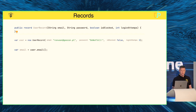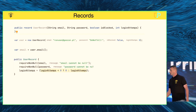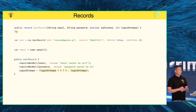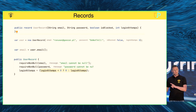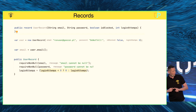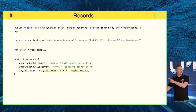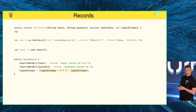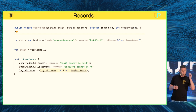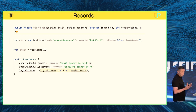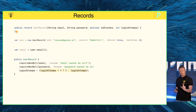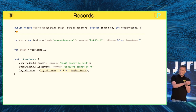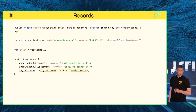Records also come with compact constructors. You write the constructor without specifying the fields, because the compiler already knows them from the definition. In this way you can still do all your validations on the incoming values. When I refer to requireNonNull on the email, I'm referring to the parameter value, not the instance variable. I'm not setting any values here — the compiler takes care of that for me.